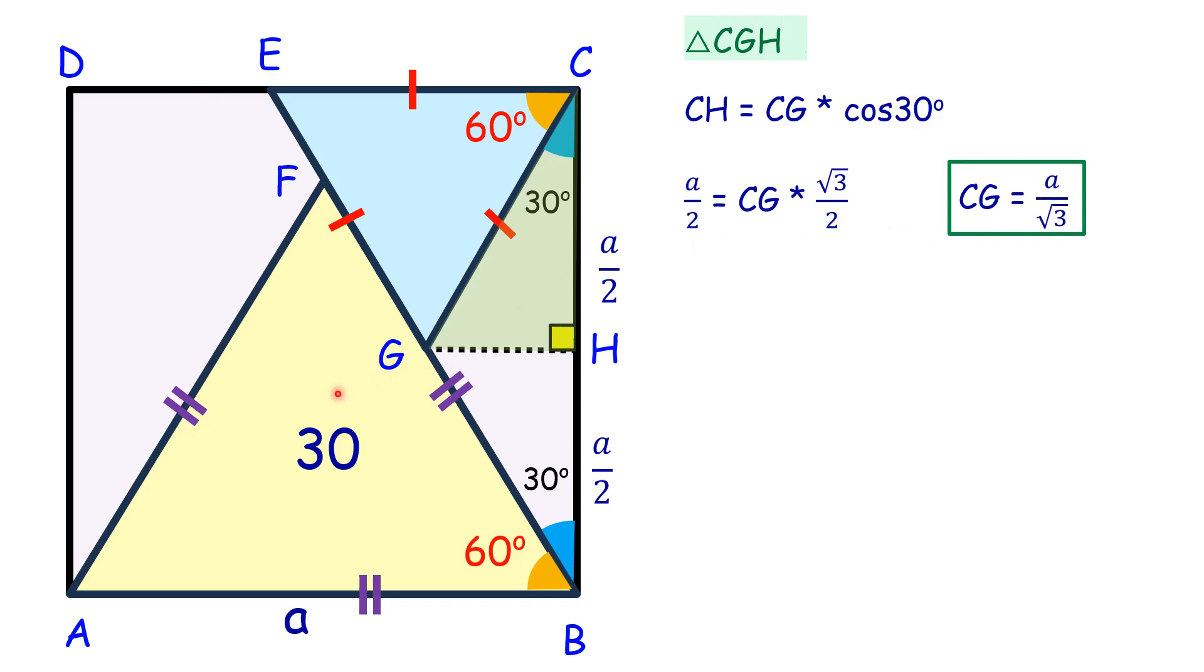We know that in equilateral triangles, all angles are equal, so they are similar. Therefore, triangle ABF is similar to triangle ECG.